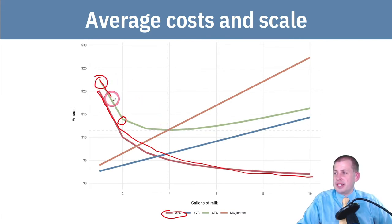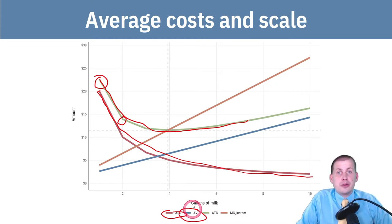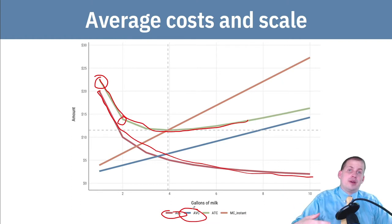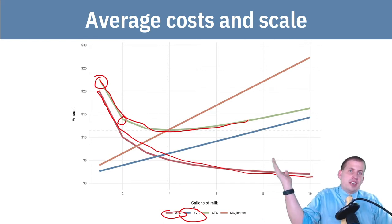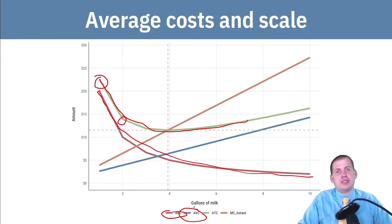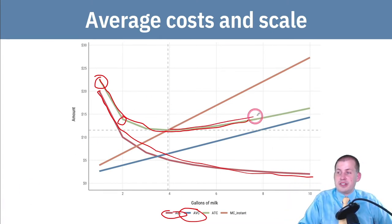But if you notice this green line, it goes down, then somewhere in the middle it flattens out, and then it starts going up — meaning it's becoming more expensive to make stuff. The reason it goes up is because the variable costs go up. As you're creating more and more milk, you have to buy more milk, more employees, more sugar, more chocolate. That becomes more expensive the more stuff you make.